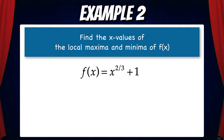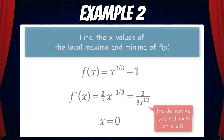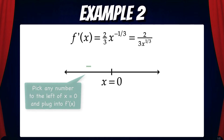Let's start by taking the first derivative and finding the critical points. f' equals two-thirds x to the minus one-third, which equals 2 over 3 x to the one-third. Here we can see that the derivative does not exist at x equals zero, which means x equals zero is a critical point. Since we don't have a picture of the graph, we'll draw a number line and place x equals zero on it. Then we need to determine the sign of f' to the left and right of x equals zero. If we pick any number to the left of x equals zero and plug it into f', the result will be negative.